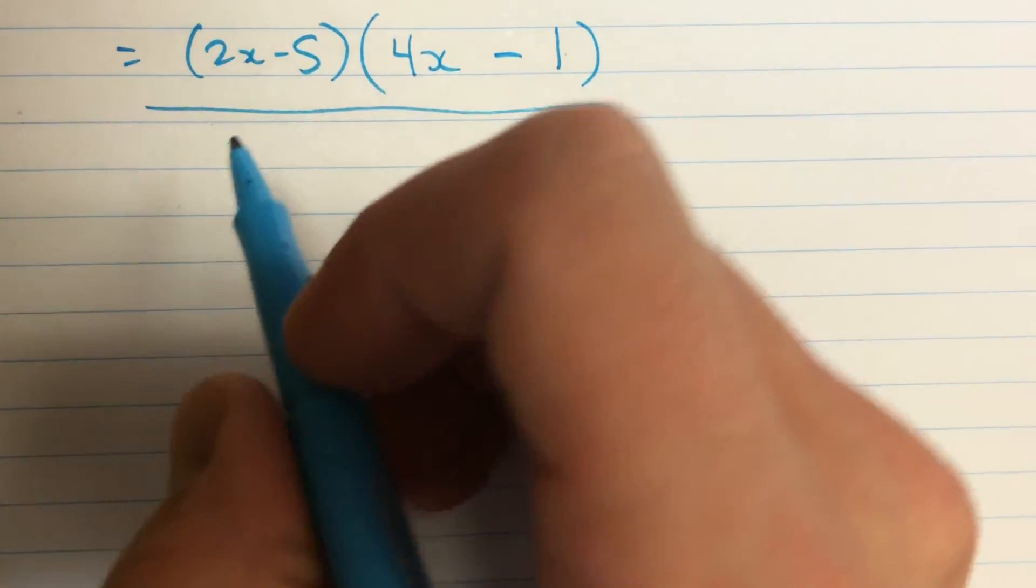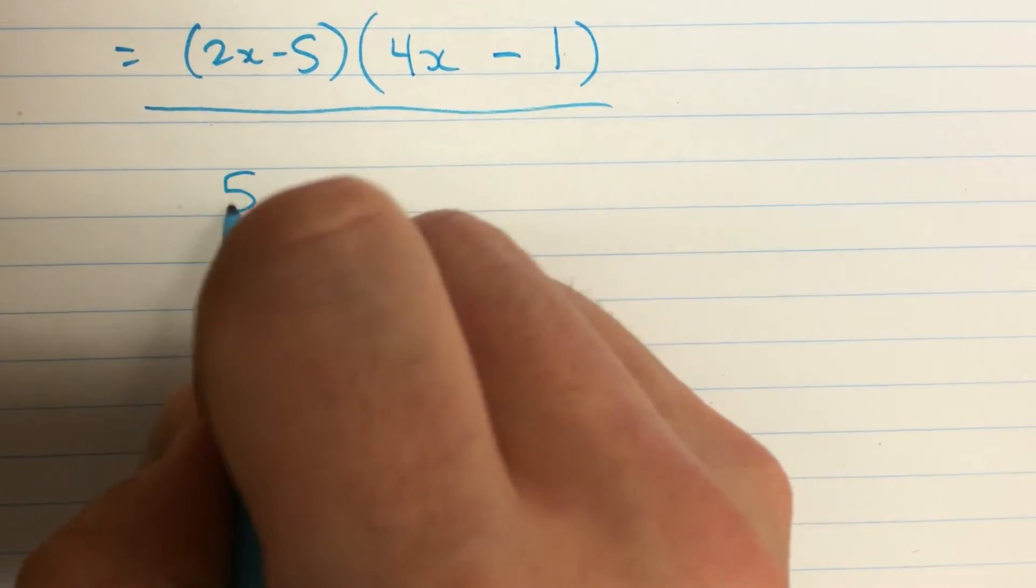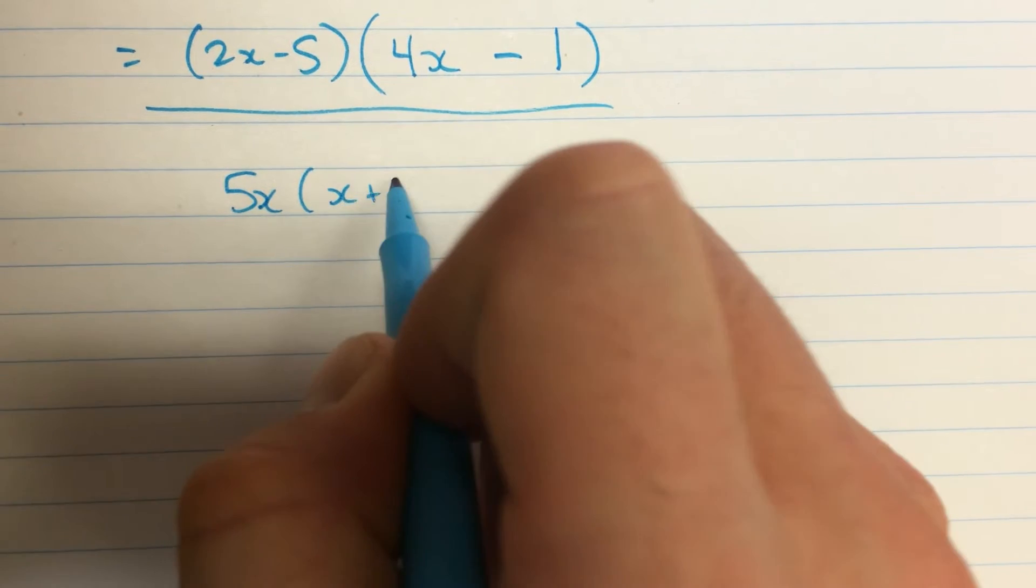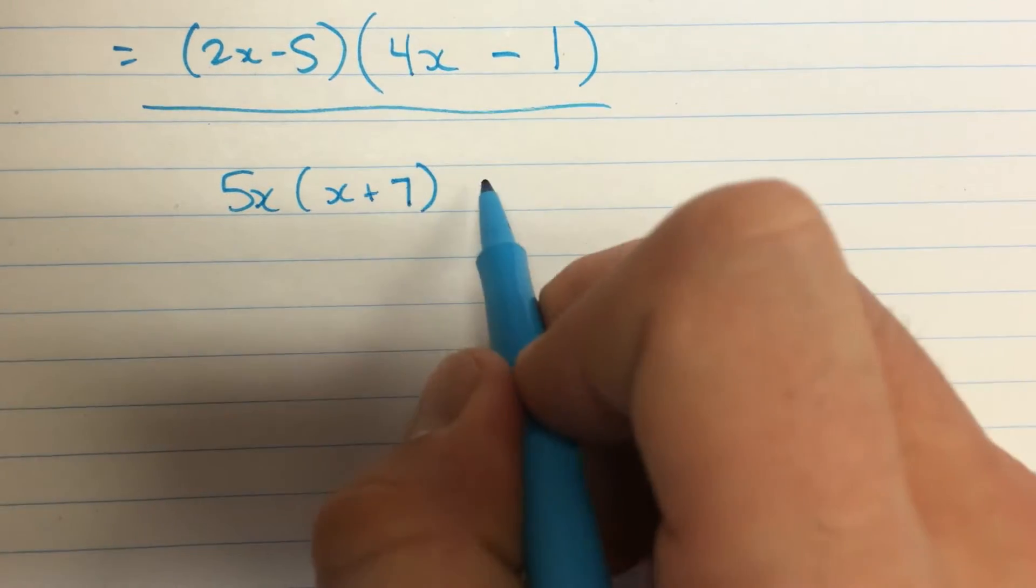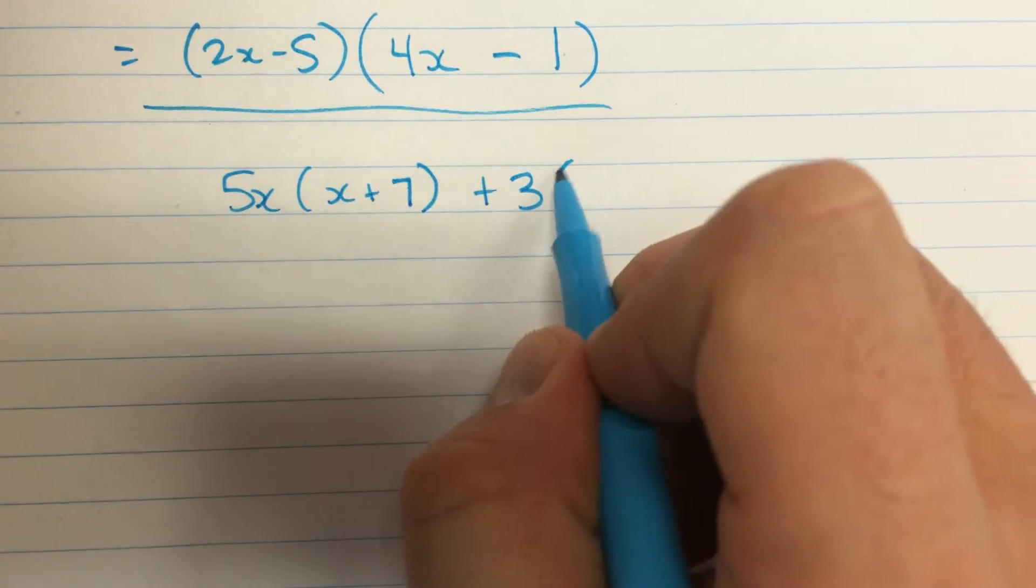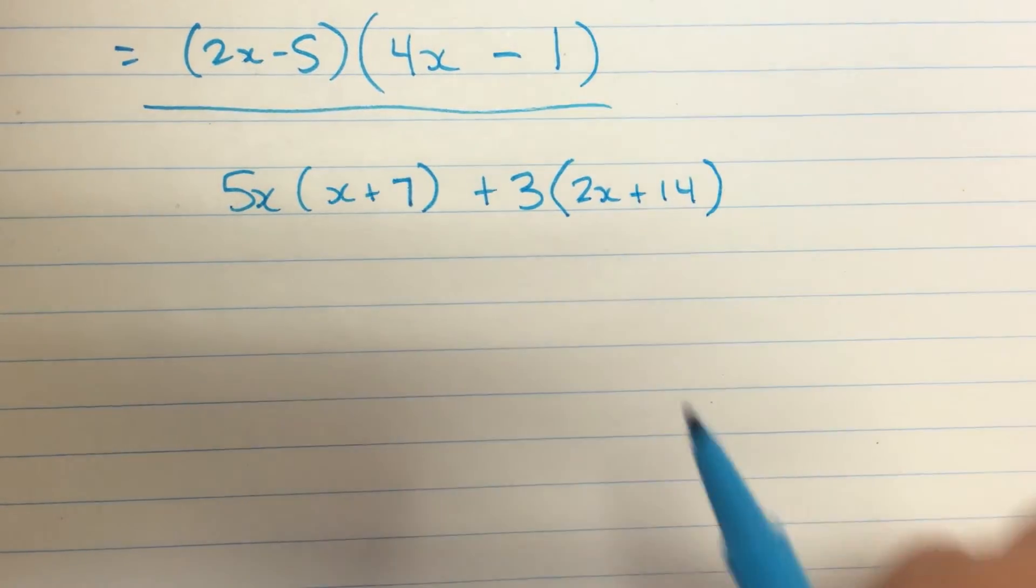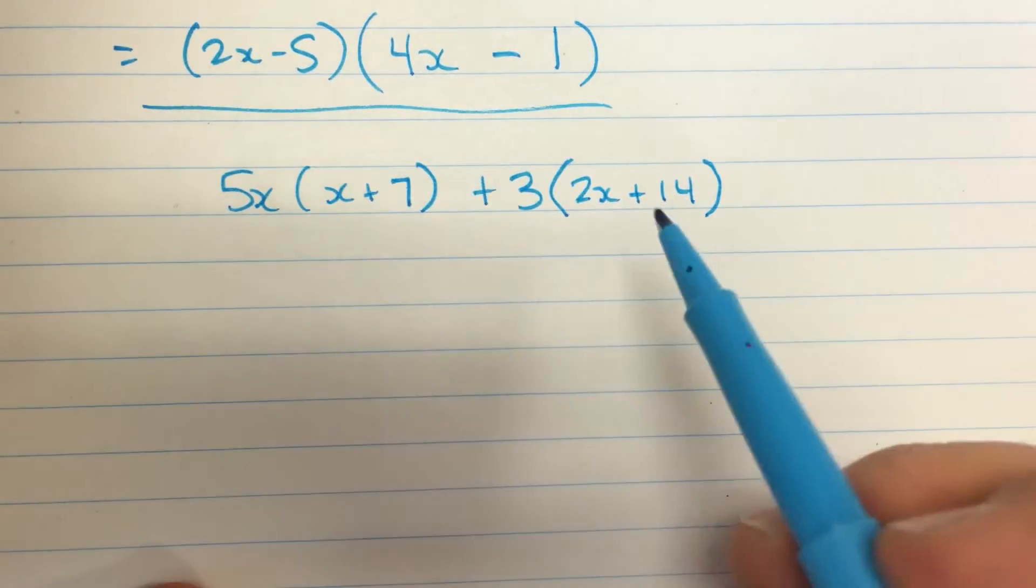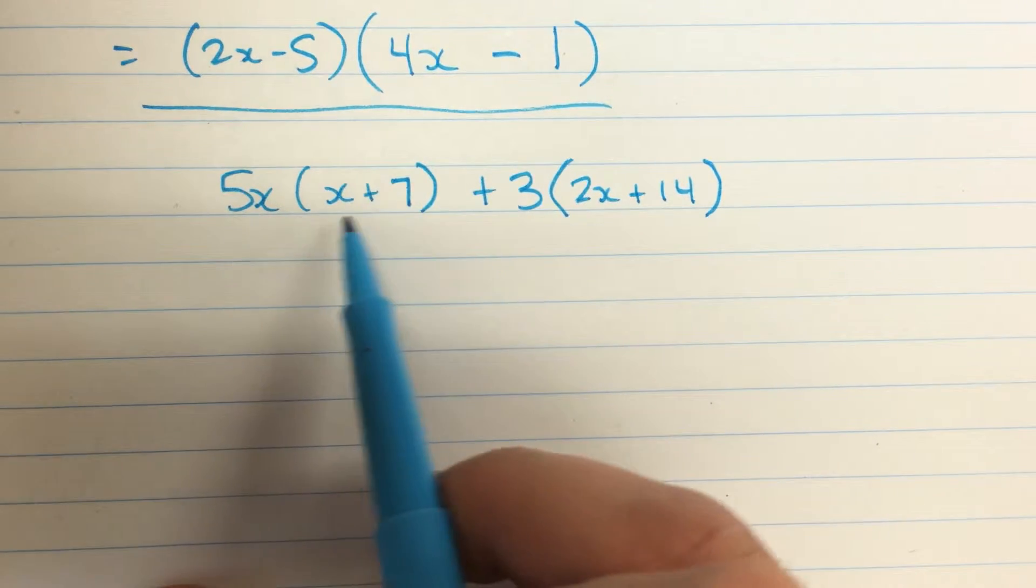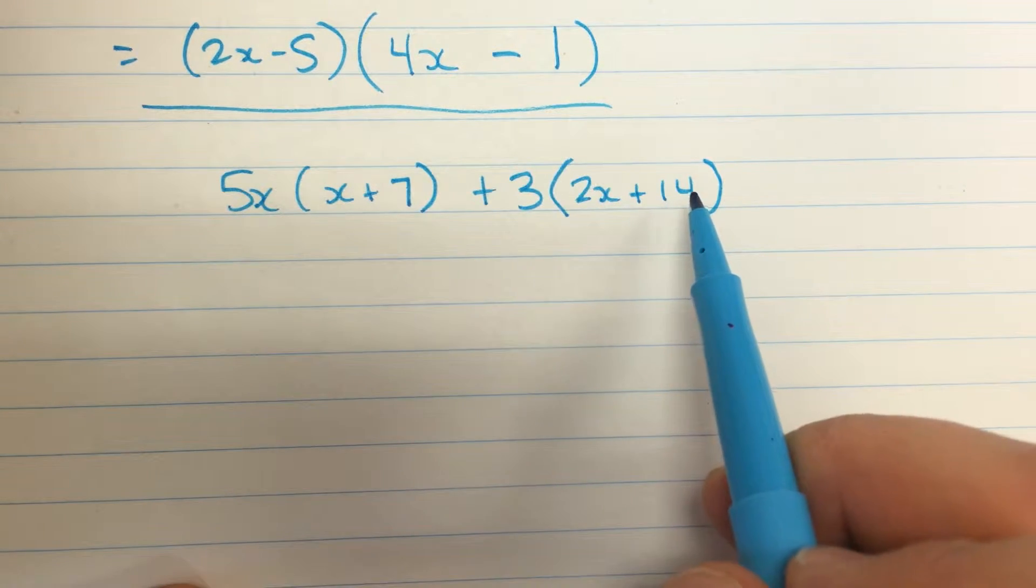Okay let's try one more of these. How about 5x times x plus 7 plus 3 times 2x plus 14. Now at first glance this does not look the same. Because this expression here, this binomial, is different from this binomial.